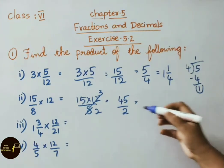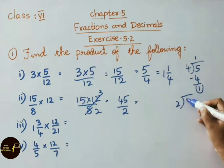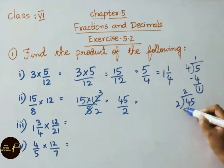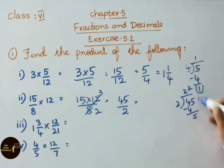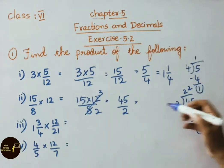Now we shall simplify 45 by 2 by doing the division. 2 twos are 4, again 2 twos are 4. 5 minus 4, we get a remainder of 1. So the answer is 22 and 1 by 2.